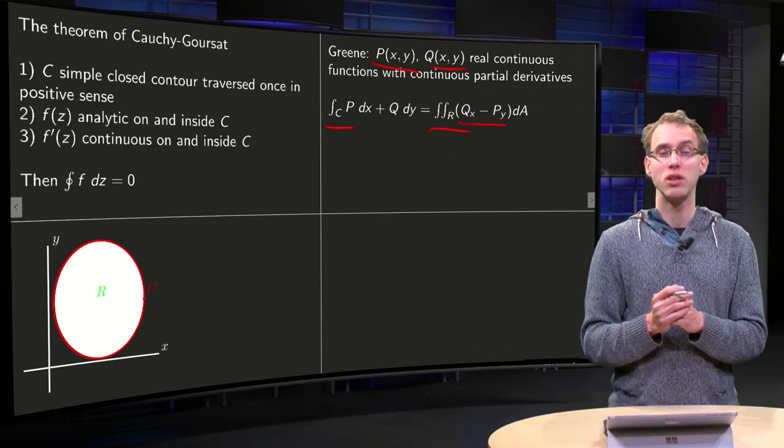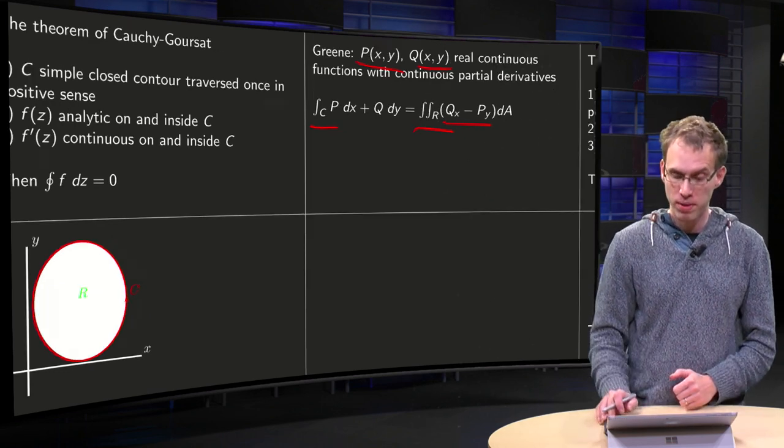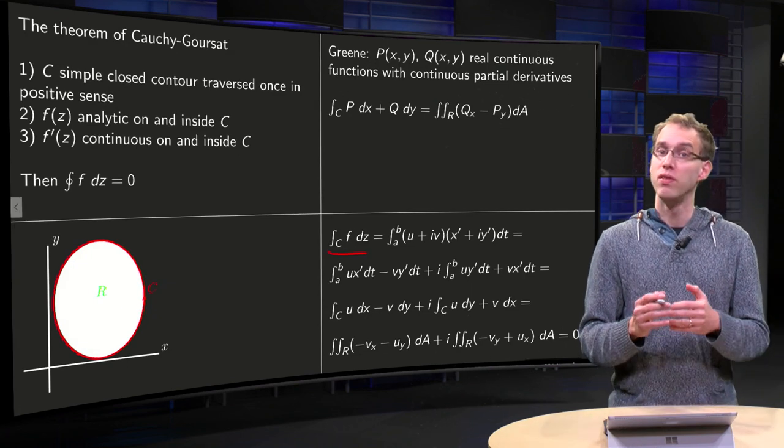So, how can we use Green's Theorem to prove the Cauchy version of Cauchy-Goursat? Well, we have the integral along C, F dZ. We know how to compute it.